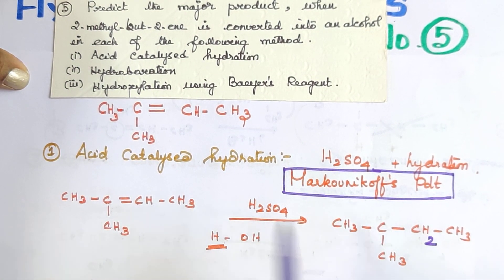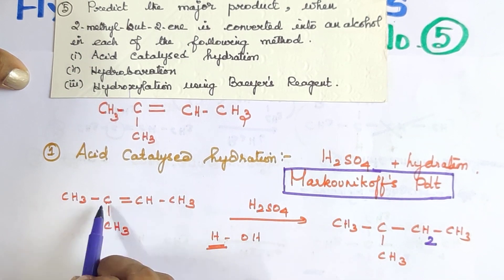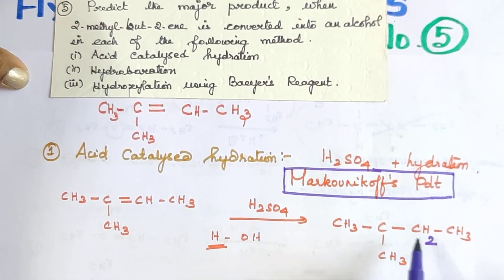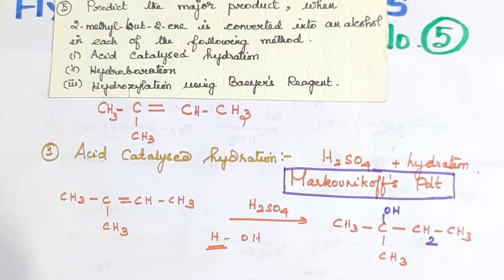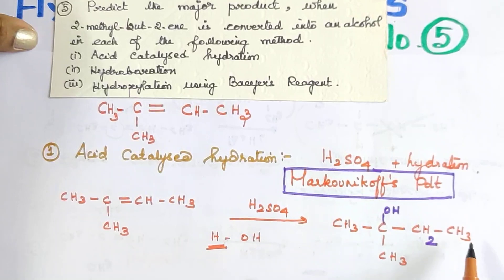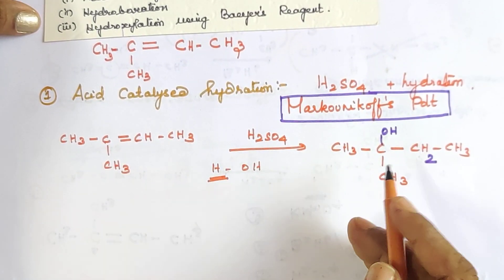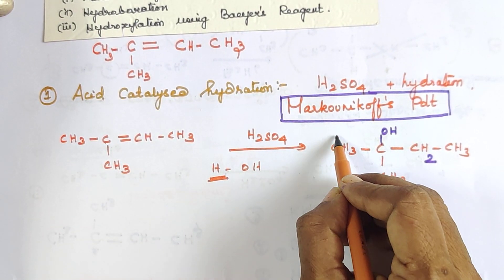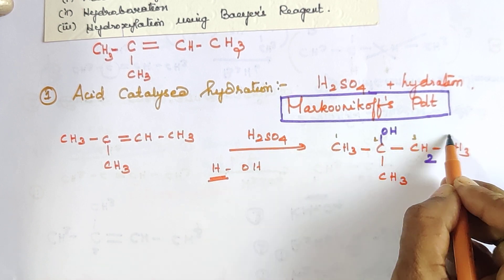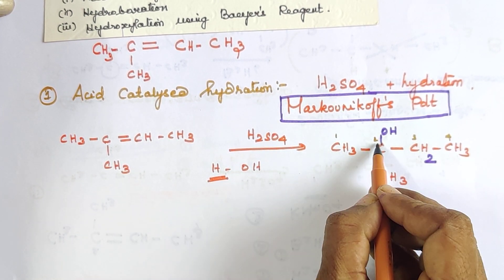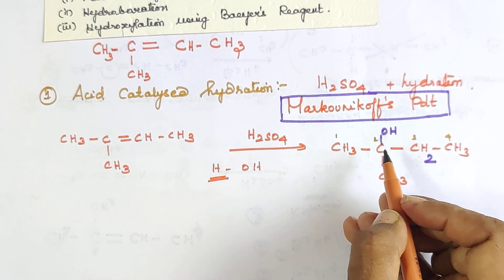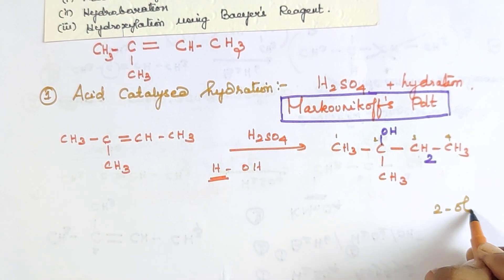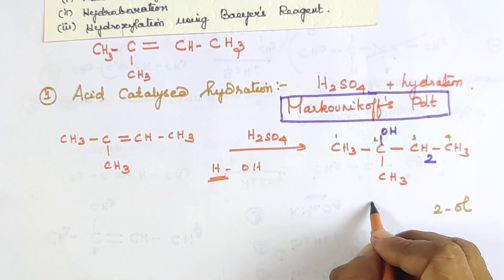The major product formed is 2-methyl-butane-2-ol. Numbering the carbon chain gives 4 carbon atoms. This is the Markovnikov product where OH is added to carbon 2, the more substituted carbon.